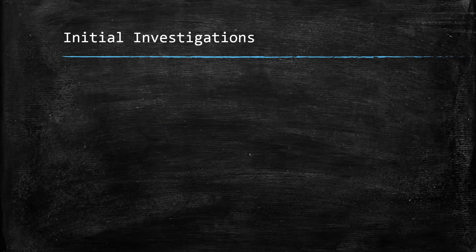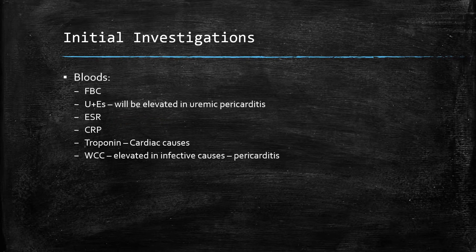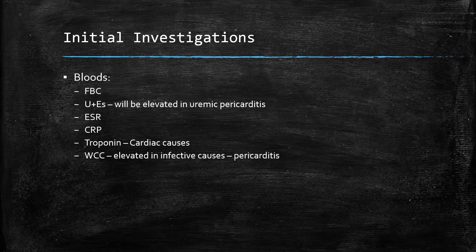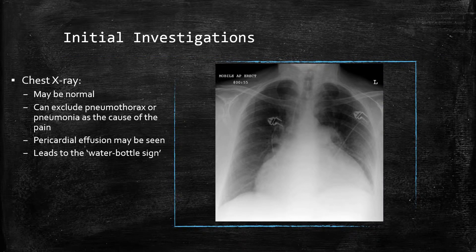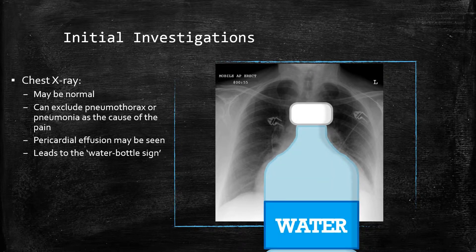Initial investigations to narrow in on the diagnosis include taking bloods. Urea would be elevated in uraemic pericarditis. ESR, CRP, along with WCC give us an idea of the inflammation, and troponins are elevated in ACS, though modest elevations are also seen in pericarditis. The chest X-ray itself may be completely normal and help exclude pneumothorax and pneumonia. If a pericardial effusion is present, it will lead to the classic water bottle sign.